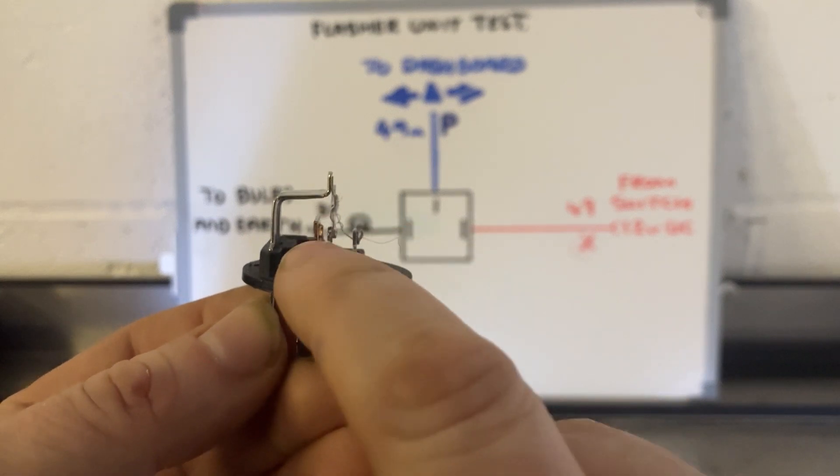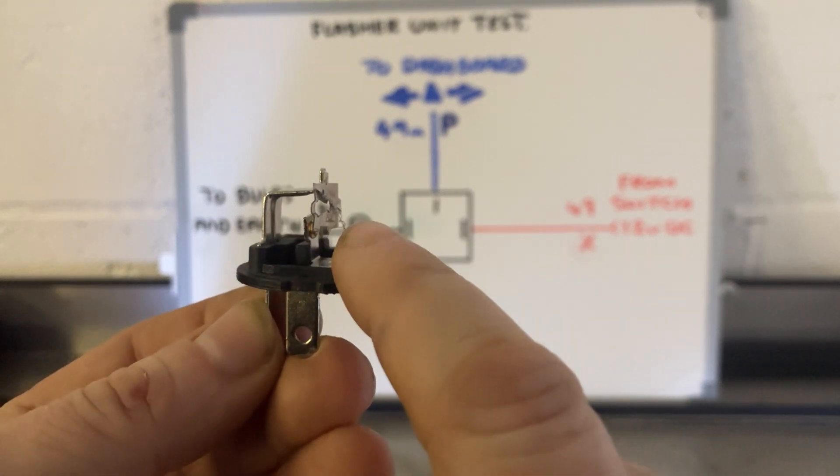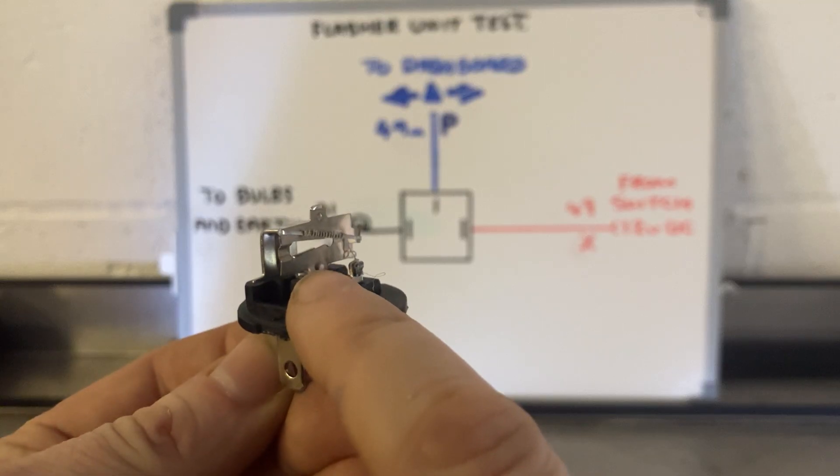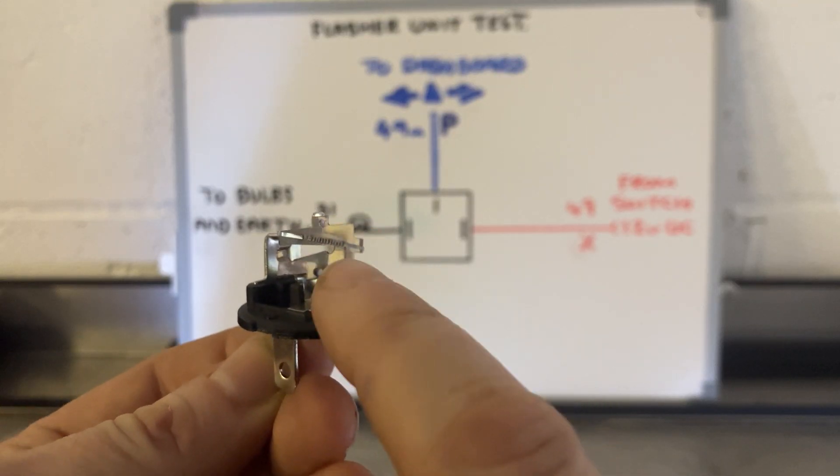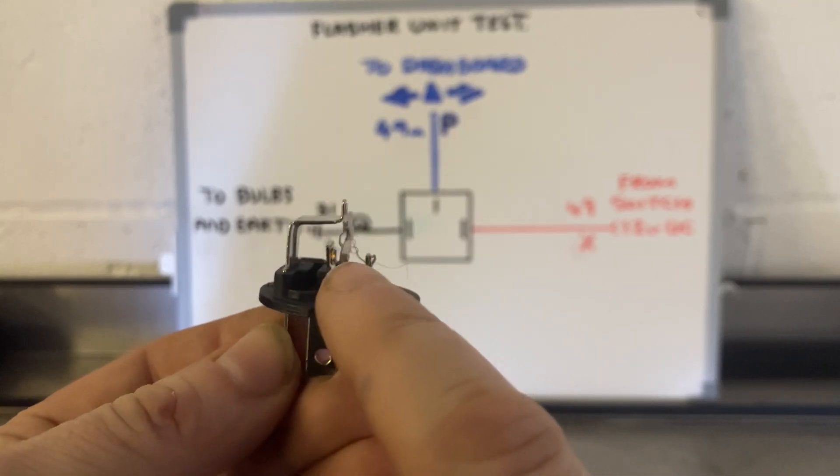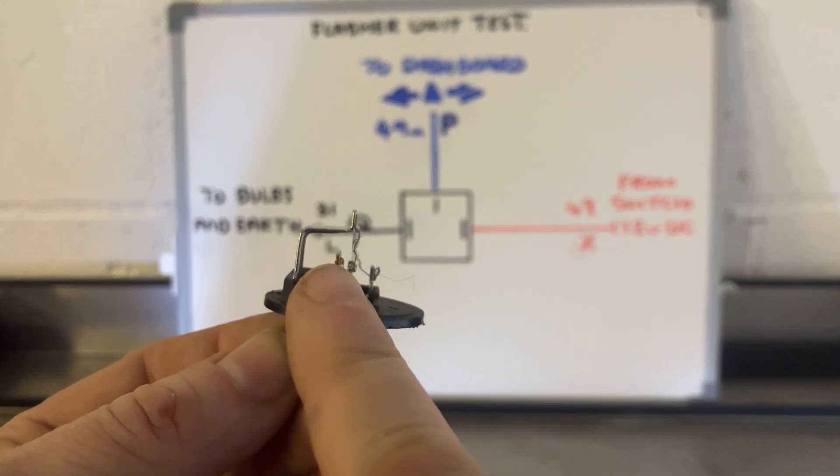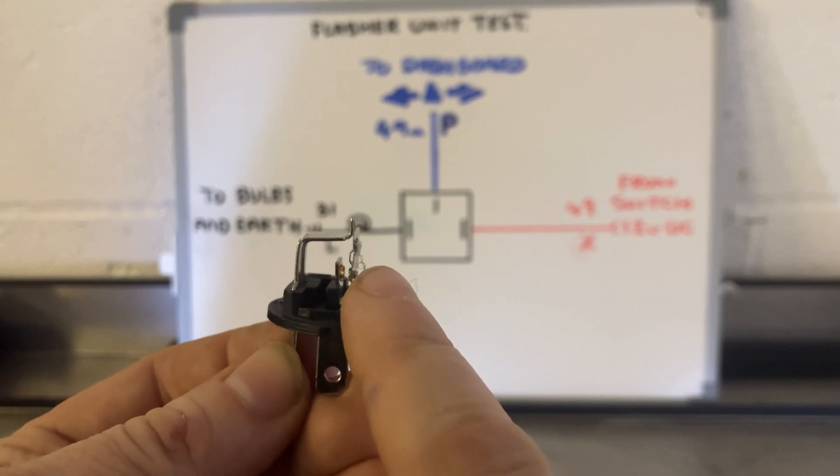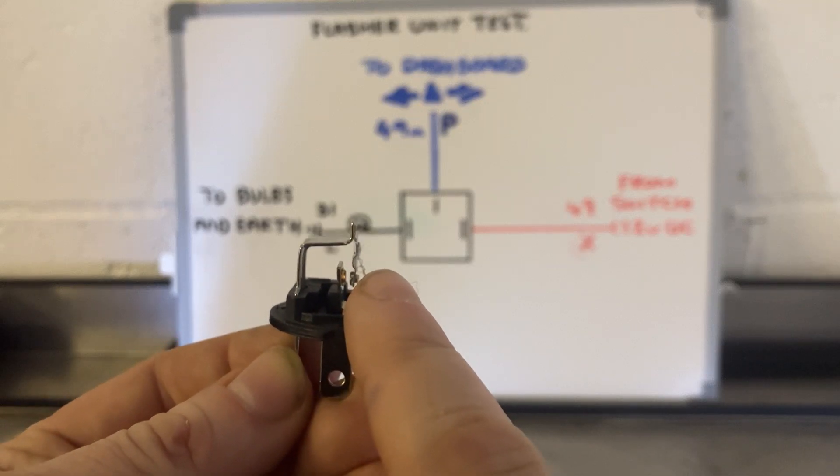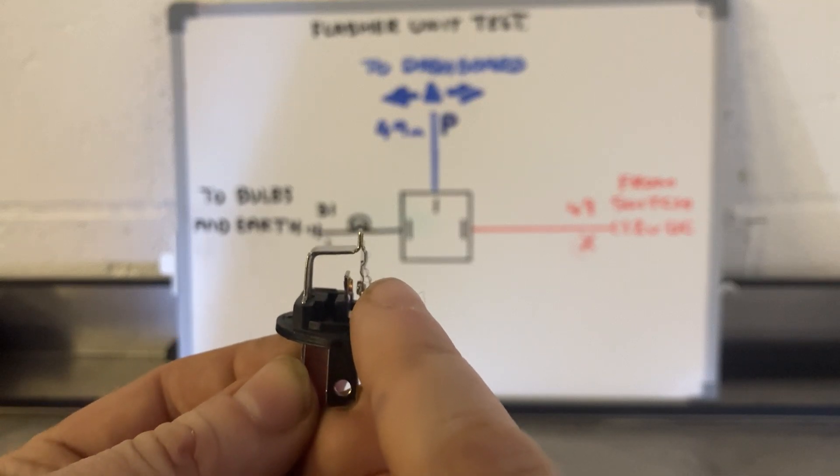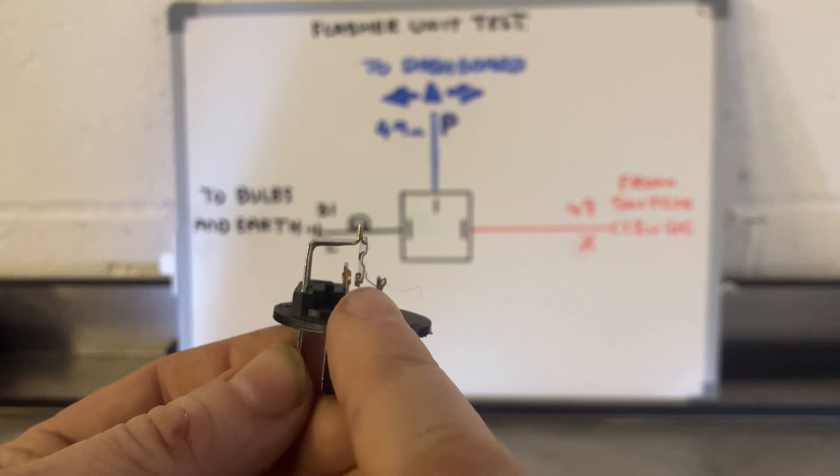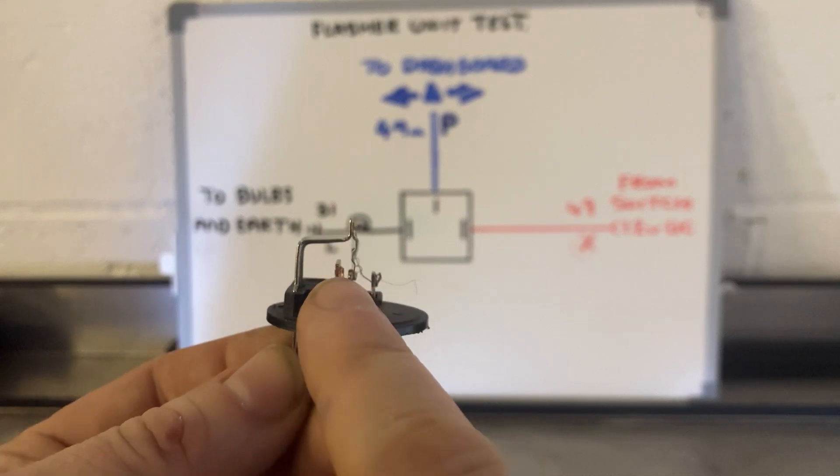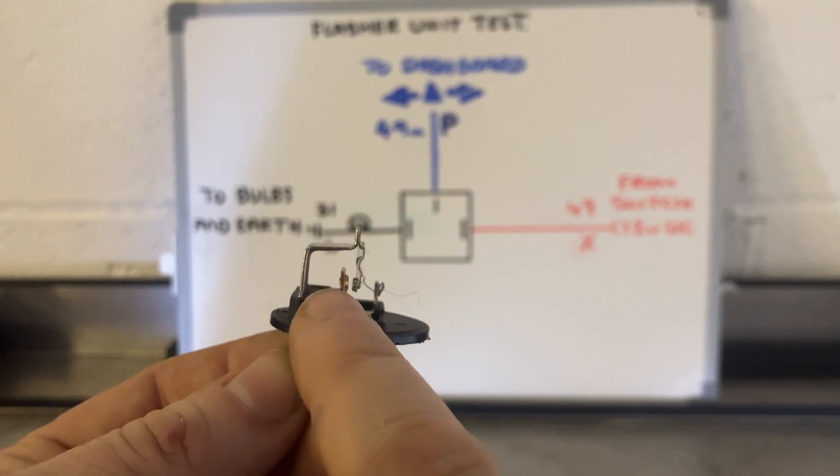But obviously, when it moves across onto that section, that then turns off the heating element because it's found a new path. The heating element will cool down rapidly. That will then disconnect because it will stop warping and move back to where it was. And then the heating element will be the only path the electricity takes. It will start warming the element again. Again, the biometallic strip will deform and reconnect and turn your indicators back on. And that system's repeated over and over again.